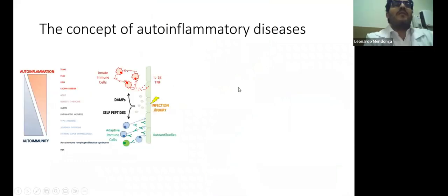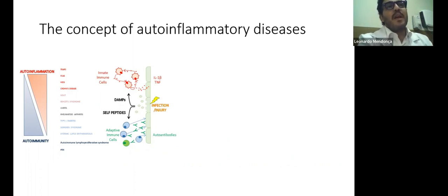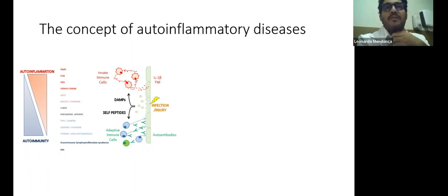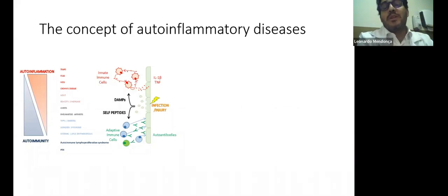The first thing we have to think about is the concept of autoinflammatory disease, because until almost 20 years ago, all the inflammatory phenomena that we could observe in humans were called autoimmune or autoimmunity disease. Autoimmune disease is a phenomenon generated by T or B self-reactive cells that generate autoantibodies to some specific tissue, leading to systemic or localized autoimmune disease.